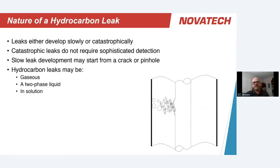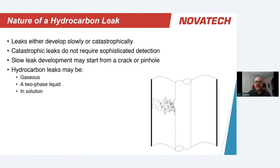The way leaks develop over time varies. They can be slow or very rapid. Obviously a rapid catastrophic leak doesn't need a sophisticated system to detect — it'll be very obvious. But slow leaks can develop very slowly, starting as just a crack or pinhole due to corrosion or stress cracking. The hydrocarbon can transfer into the cooling water in different forms: as a gas, as a liquid that does not readily dissolve forming an emulsion, fully dissolved in solution, or a combination of all three.